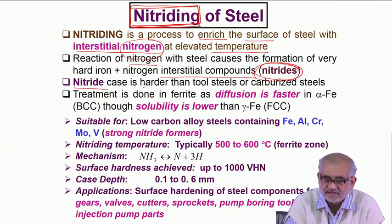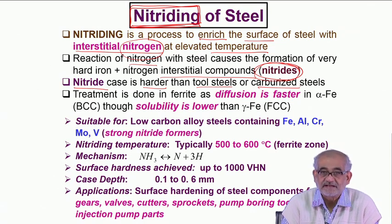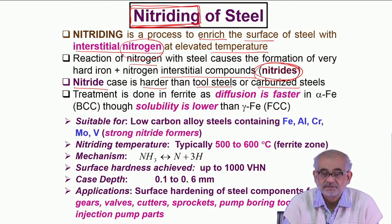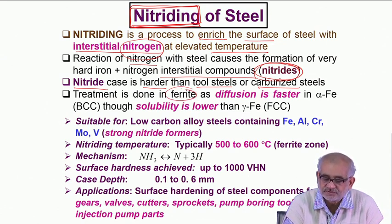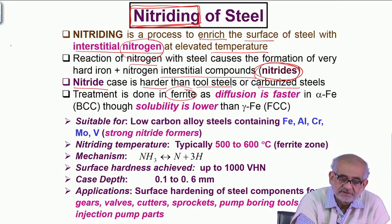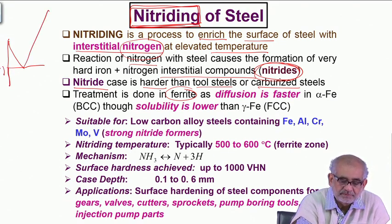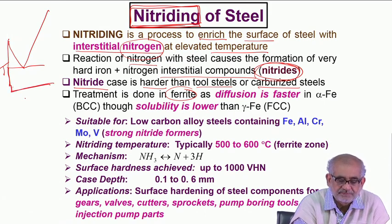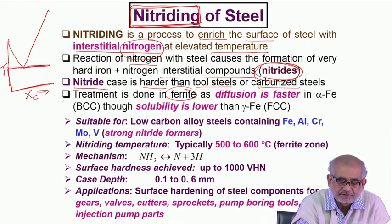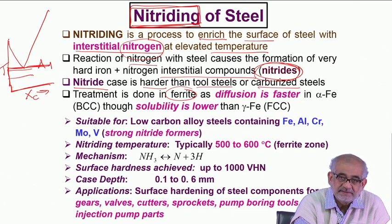The nitrided case is actually harder than even tool steels or carburized steels. However, this treatment is typically done in the ferritic range — that is, below the eutectoid temperature A1. The typical treatment temperature range is ideally about 480–490 to about 550 degrees Celsius.